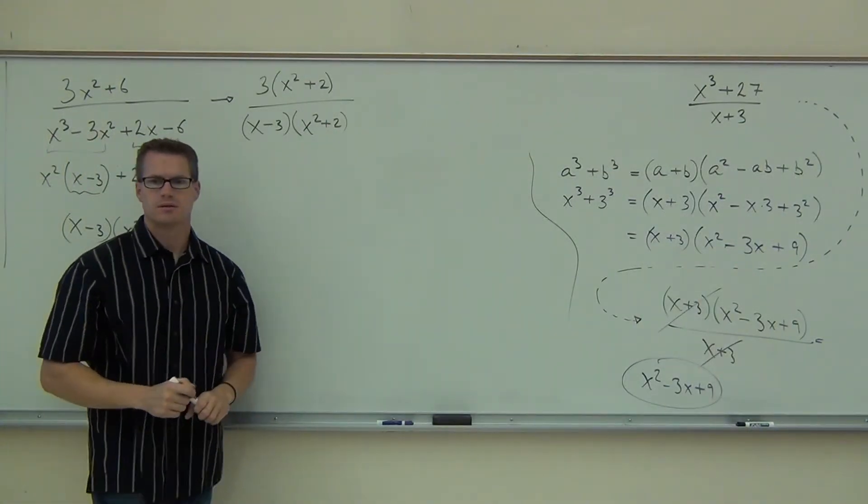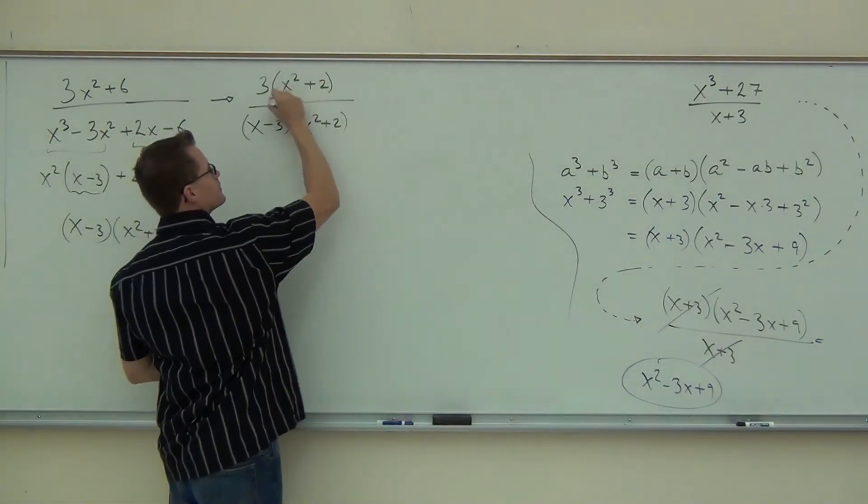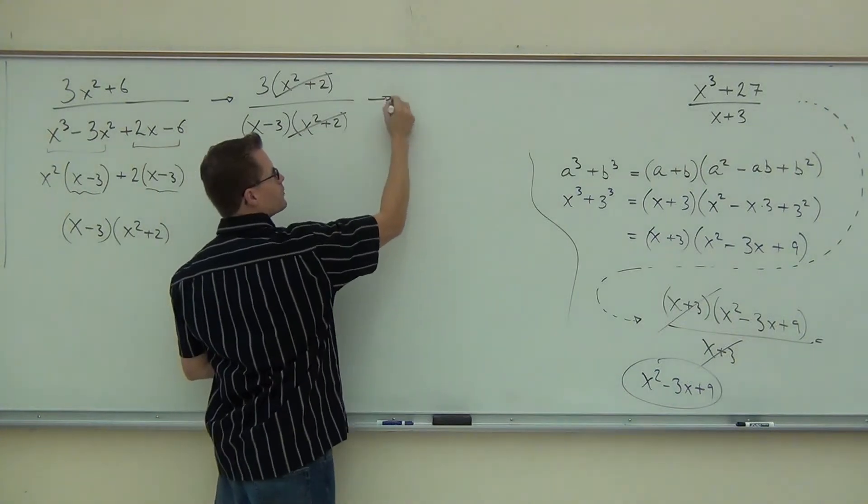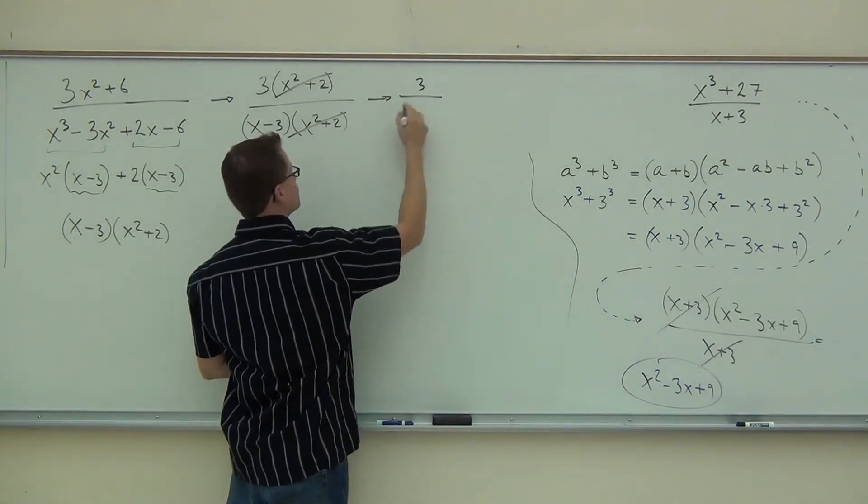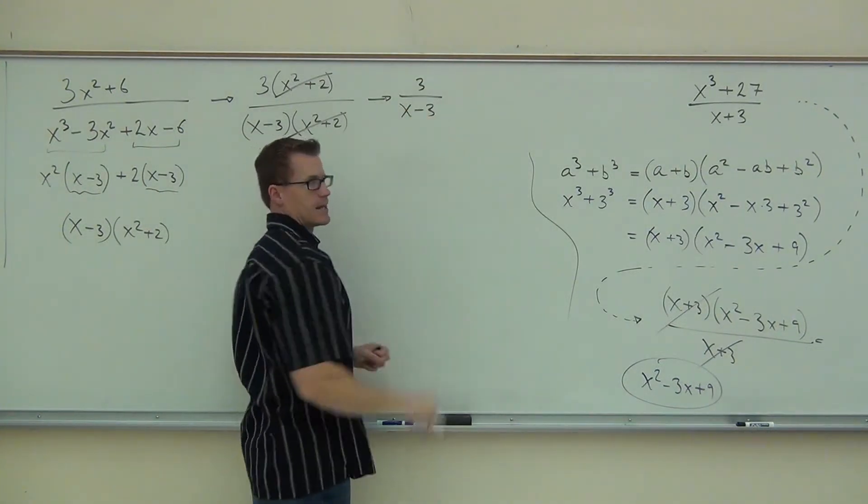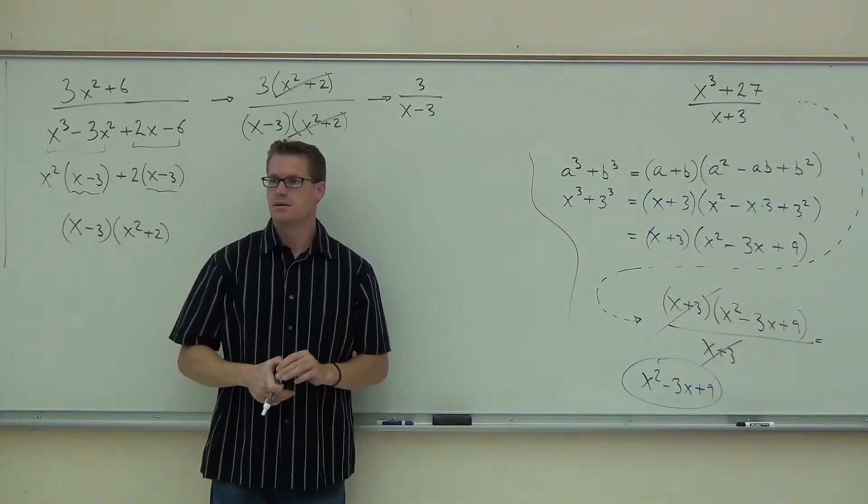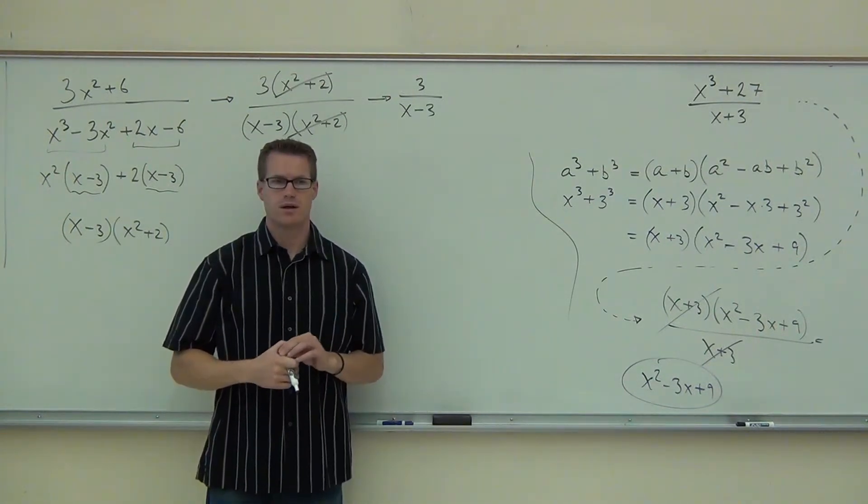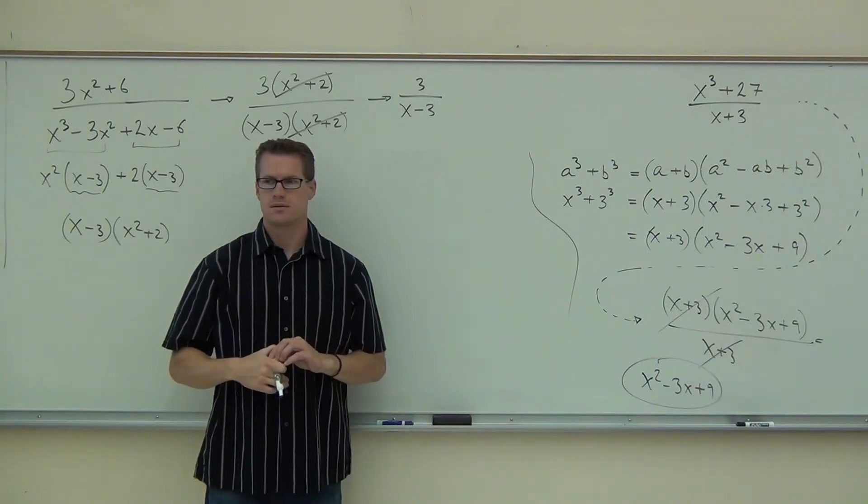Does anything simplify? Yes. Perfect. We got that. We'll write what's remaining. That's a three over x minus three. And now the three is simplified, right? No. Why am I not right? Because you can't write them for terms.